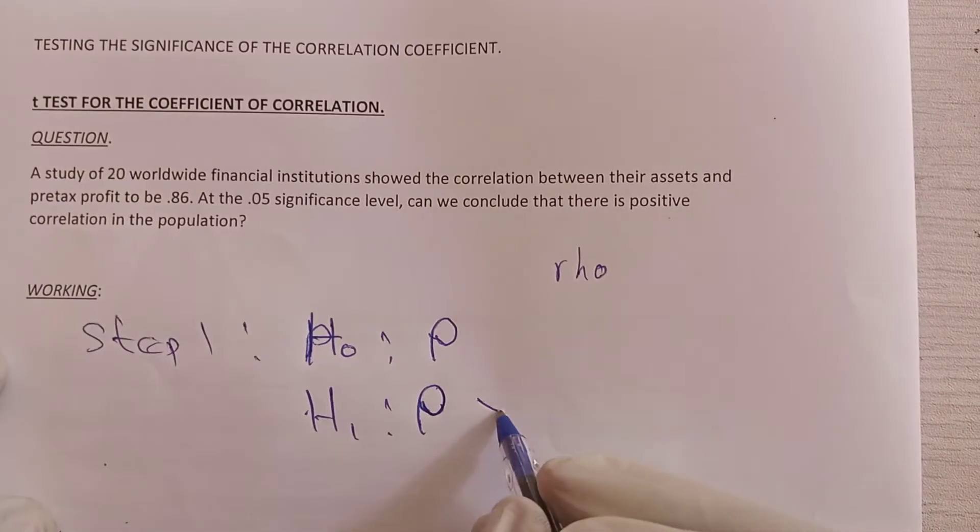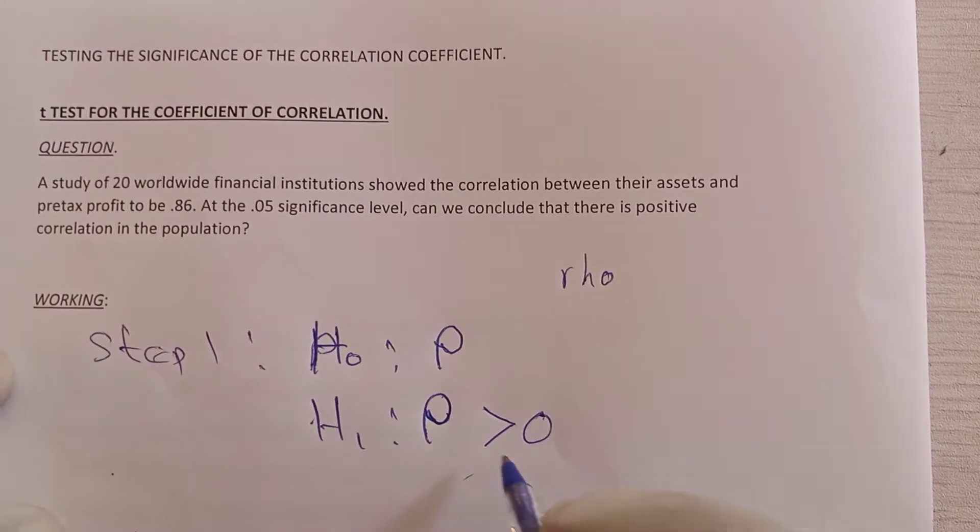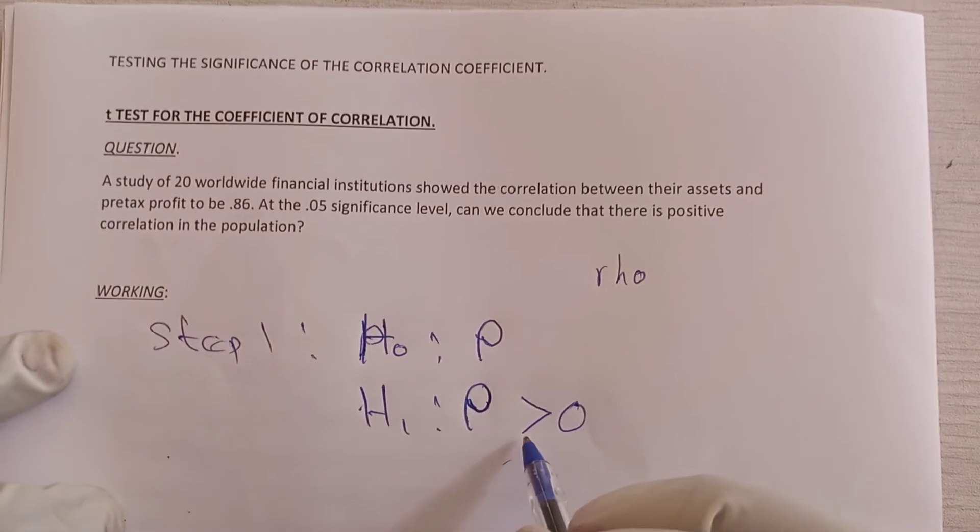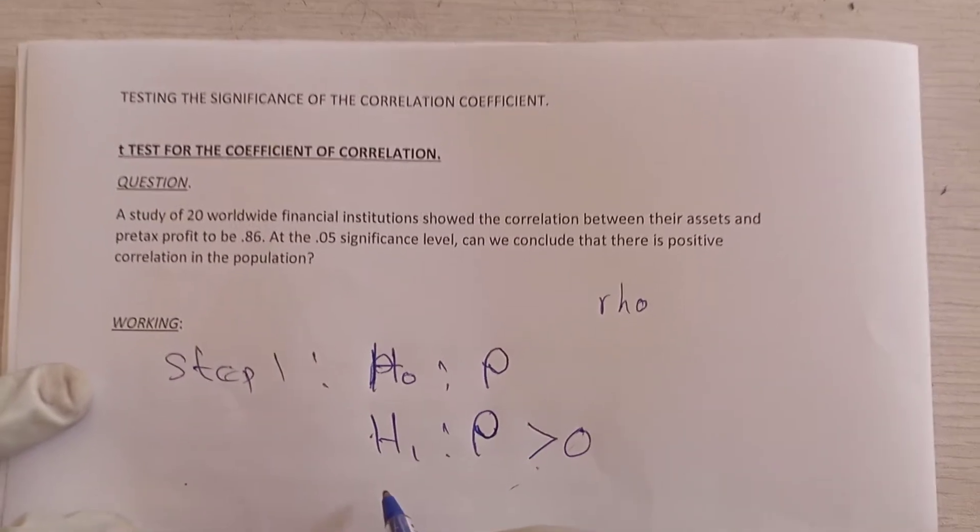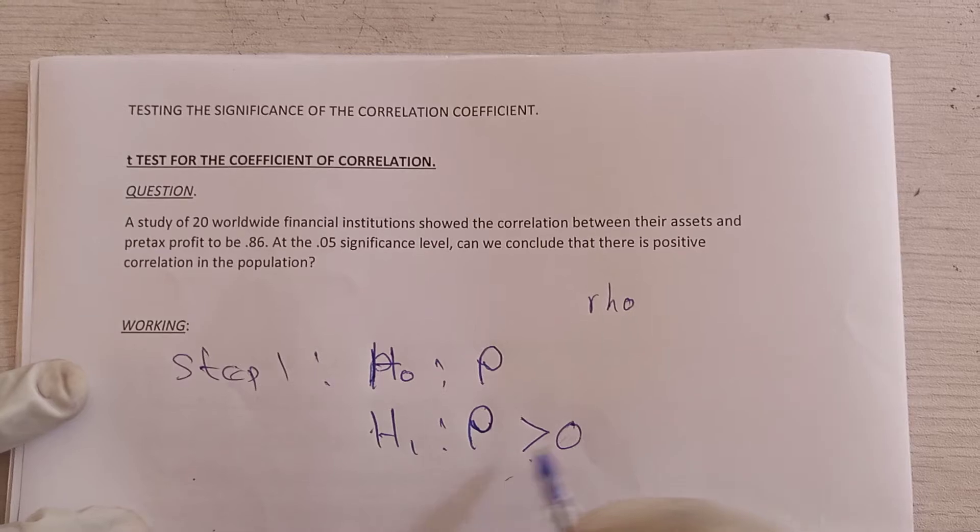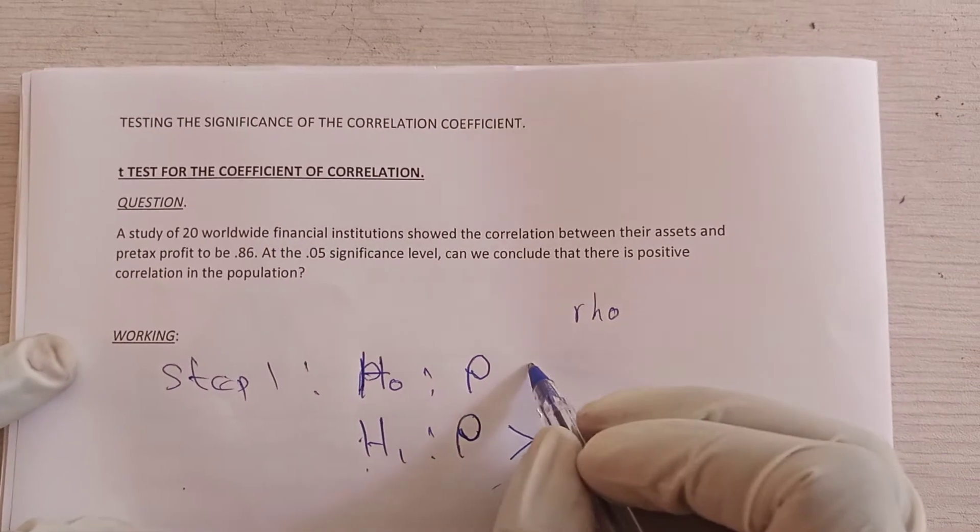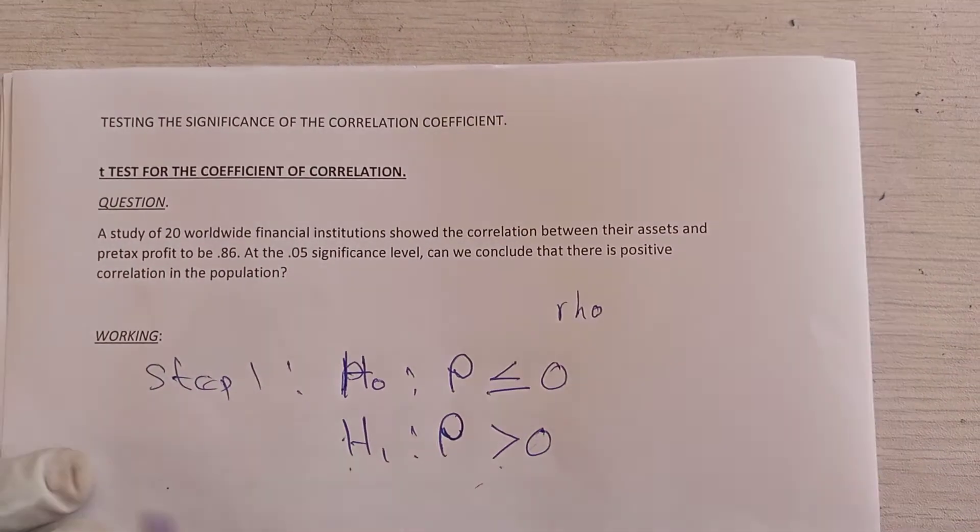Positive means what? Greater than 0. You know when you have a greater than sign, as we've learned earlier, we say greater than sign usually go for H1. So greater than 0 goes for H1. Then opposite of greater than is less than or equal to 0.